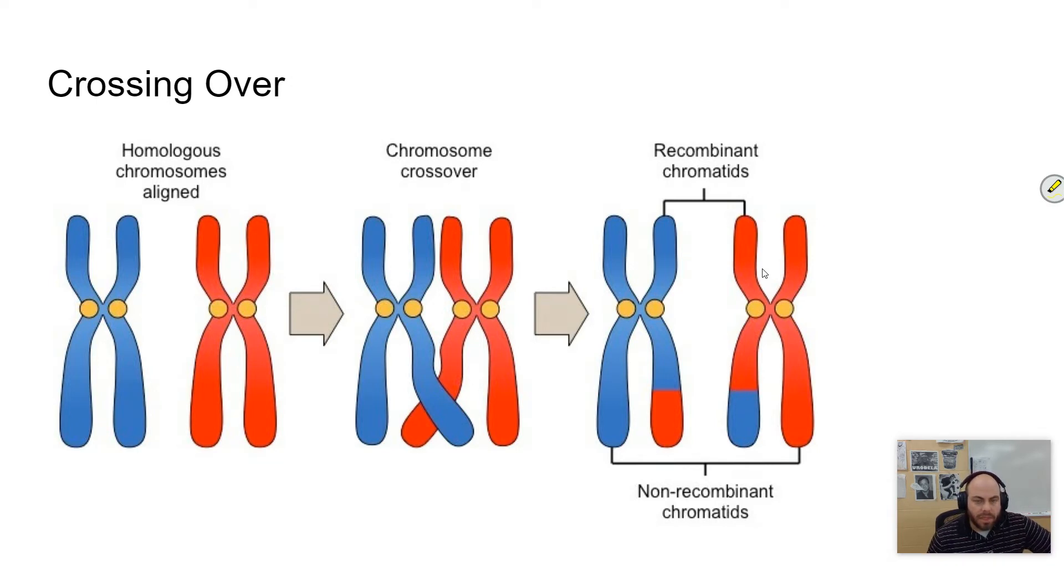Now, this only occurs during prophase one of meiosis one because this is the only time that homologous pairs are going to be together. Because if you remember, homologous pairs separate in anaphase one, and so they'll no longer have a chance to cross over. And so the result, and you see this language here that you'll probably see on the AP exam, is recombinant chromatids.